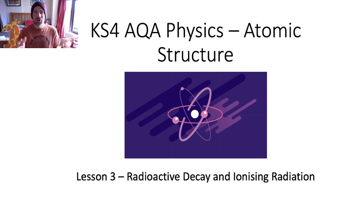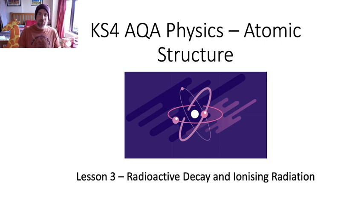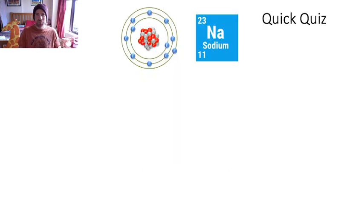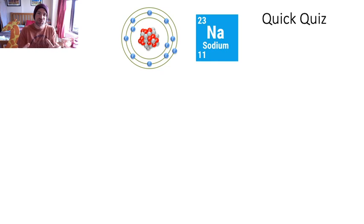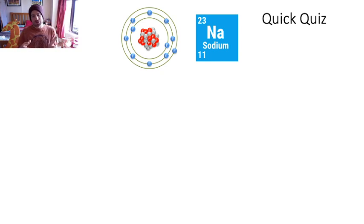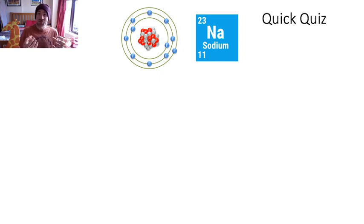Before we get into today's topic, let's do today's quick quiz. Up here we've got a picture of a sodium atom. Remember what we've been doing in atomic structure - we've been looking at what an atom actually is in terms of its structure, and we've been looking at the atomic number and the mass number. The sodium square has two numbers that tell us about the atom.